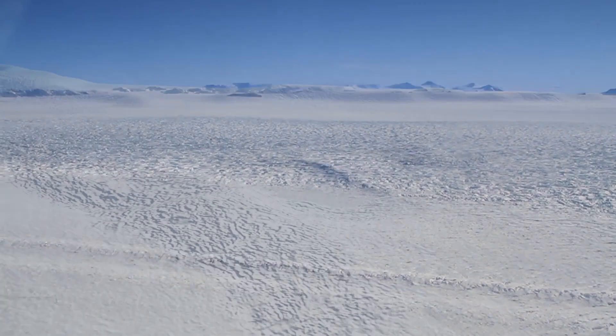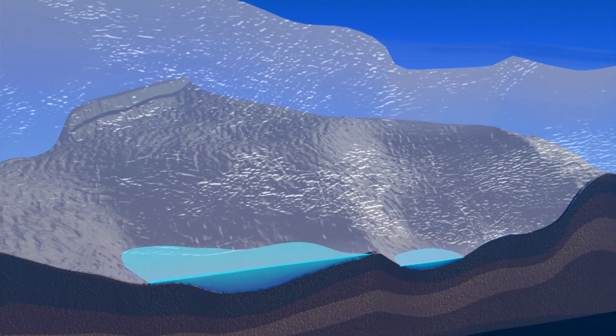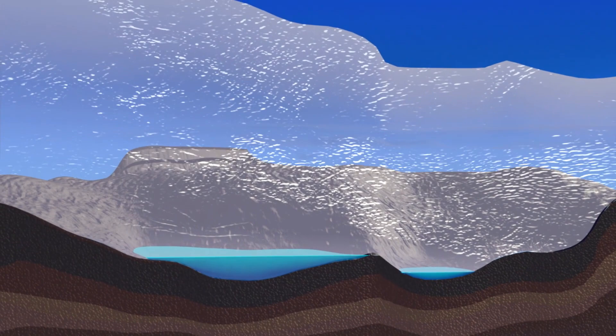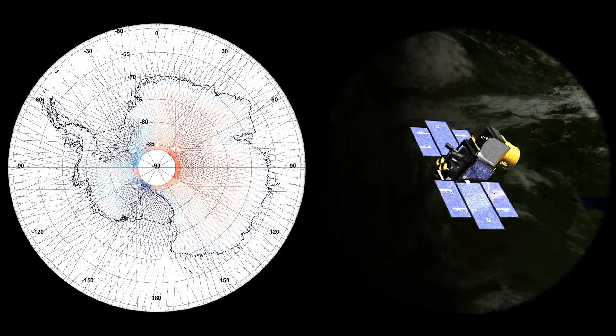Below thousands of meters of ice in Antarctica lie hundreds of meltwater lakes where the Antarctic ice sheet meets the continent's bedrock. Until pretty recently, we thought that these lakes sat quietly, isolated in pockets under the ice.